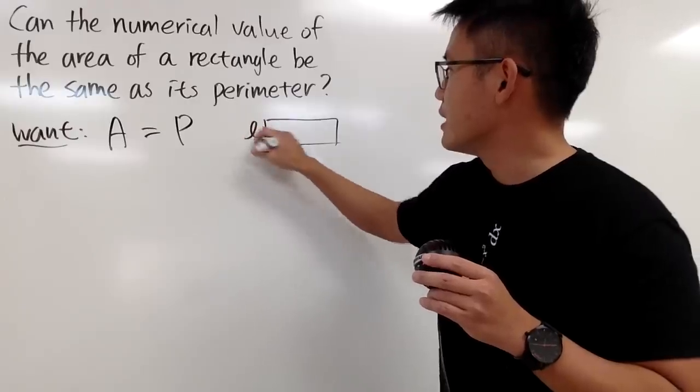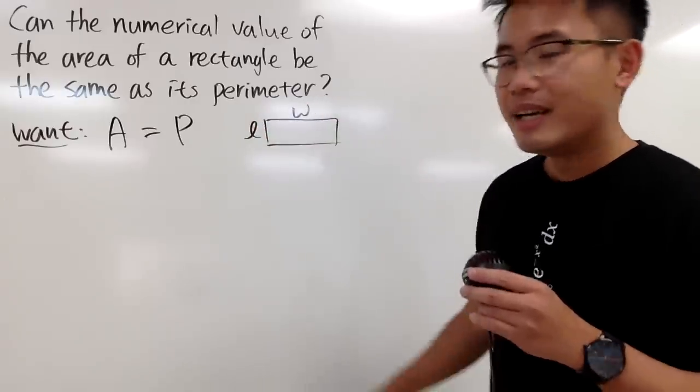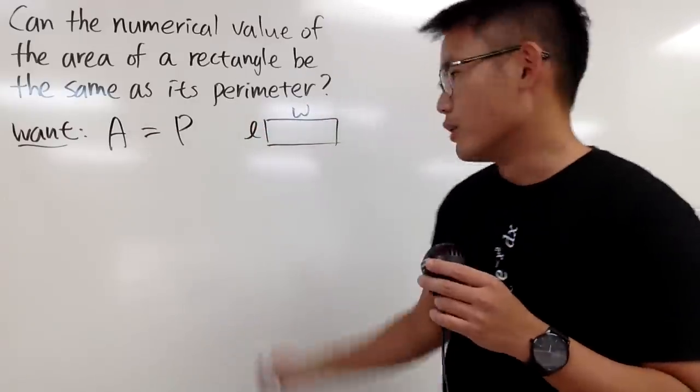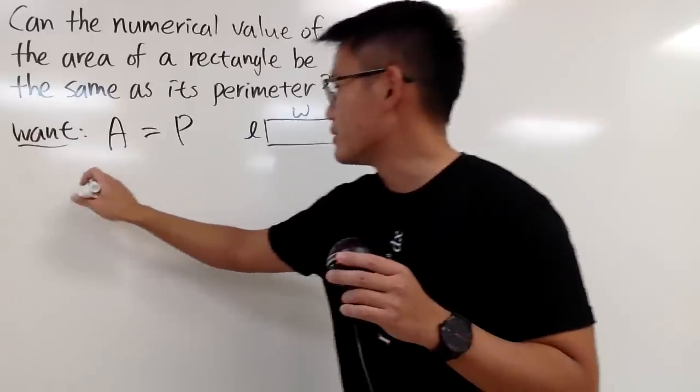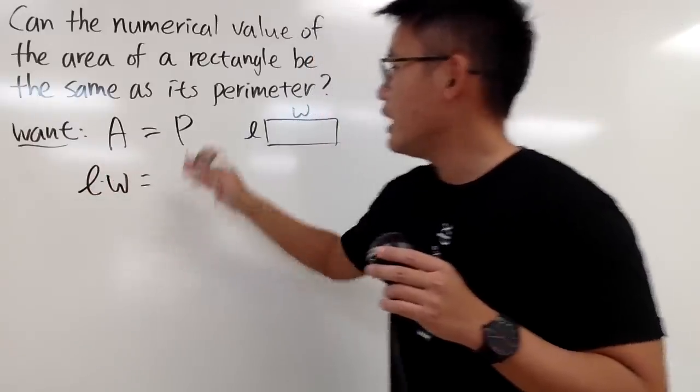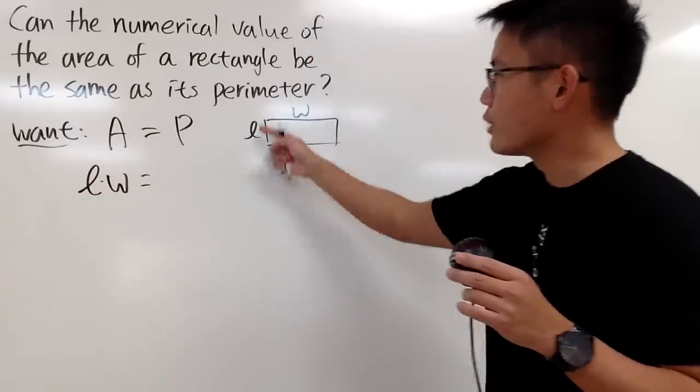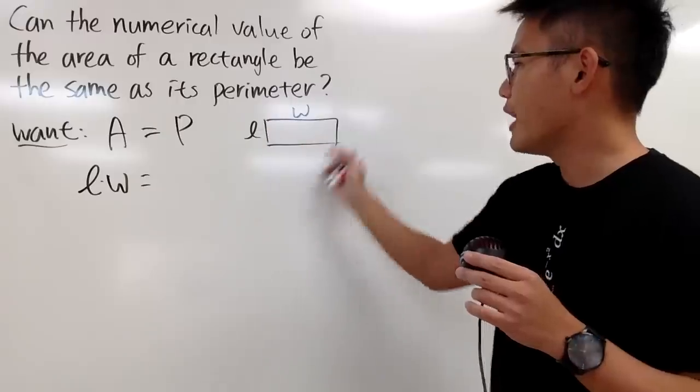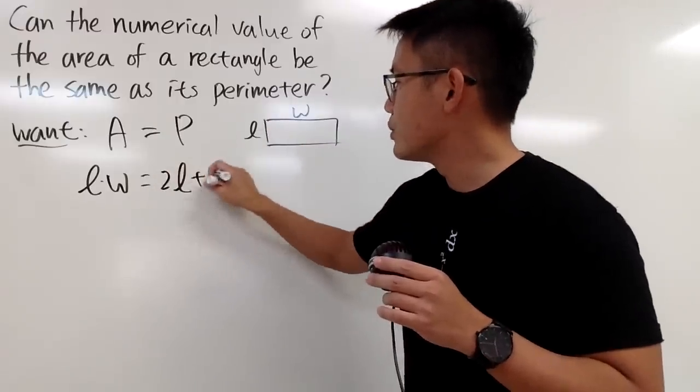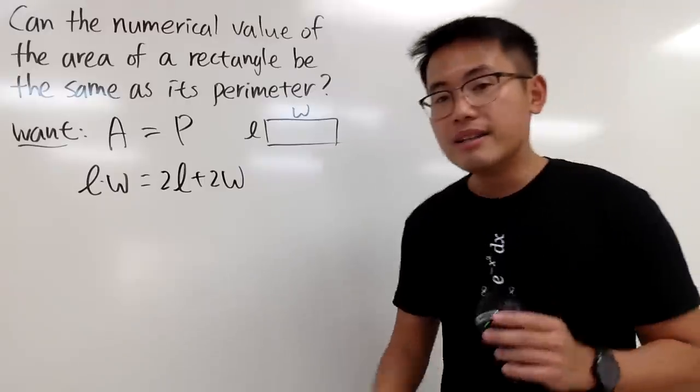Of course we're talking about rectangles. You can put down this as the length and this as the width. The area of a rectangle is just length times width, so it's just l times w. For the perimeter, you go around the rectangle one time: you have 2l plus 2w.